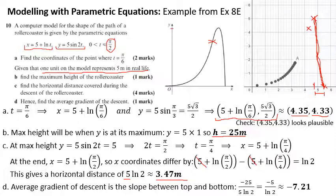The other thing to watch out for that I made a mistake when I first did this was a negative sign. We drop 25 meters. We do it over the course of 5 ln 2 or 3.47 meters. But because we're dropping 25 meters, that needs to be a negative 25. So the gradient of descent is minus 7.21.